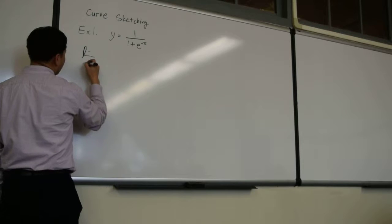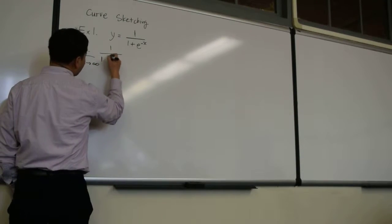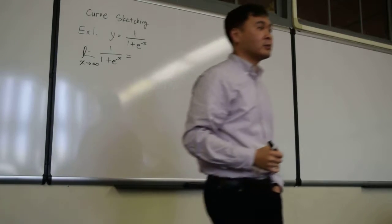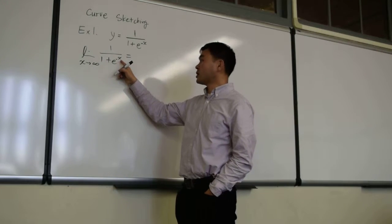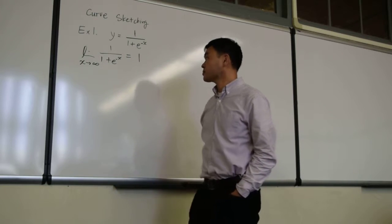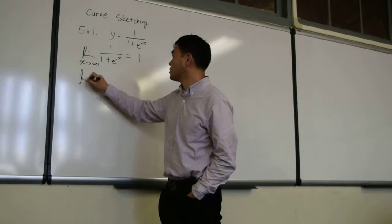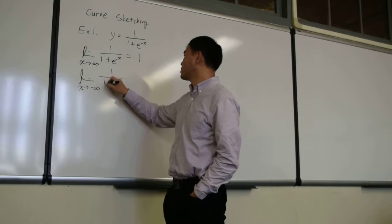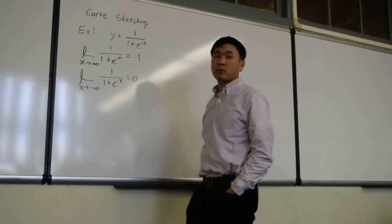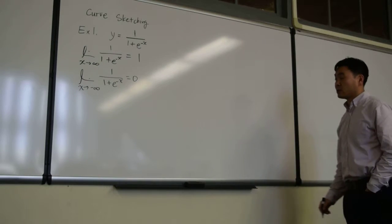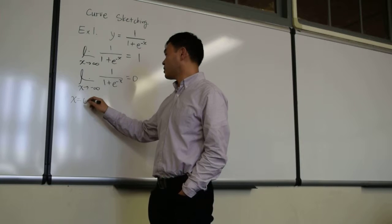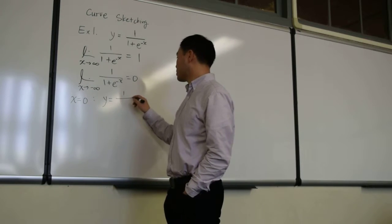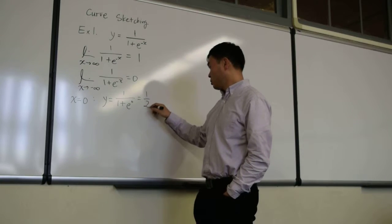First, the limit of x going to infinity of 1 over 1 plus e to the negative x. This was the value — e to the negative infinity becomes 0, so you have 1 over 1, which equals 1. Whereas the limit of x going to negative infinity was 0. Those were giving me the horizontal asymptotes. We also did the y-intercept: when x is set to 0, y is 1 over 1 plus e to the 0th power, which is 1 over 2.